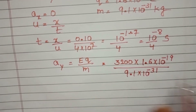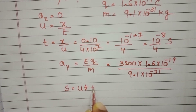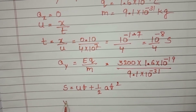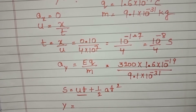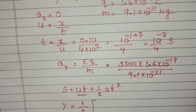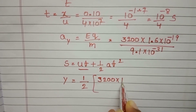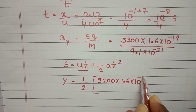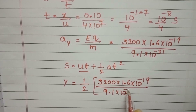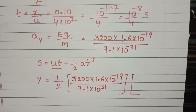We want the vertical deflection. Using the second equation of motion: S equals ut plus half at squared. Distance along y, let it be y. Initial velocity along y is zero, so y equals half into acceleration — which is 3200 into 1.6 into 10 to the power minus 19, divided by 9.1 into 10 to the power minus 31 — into t squared.